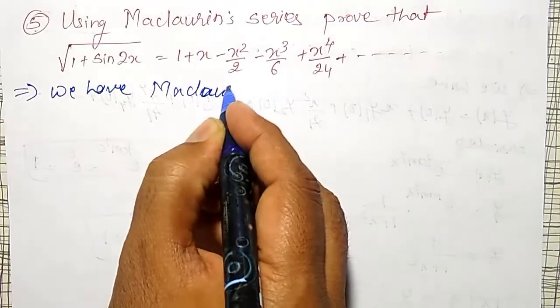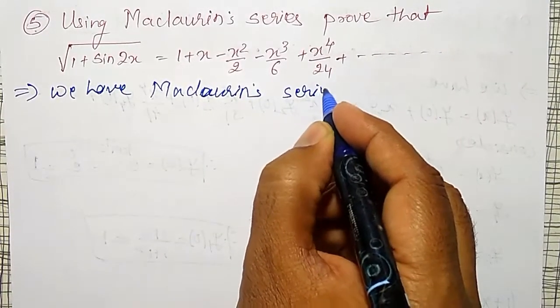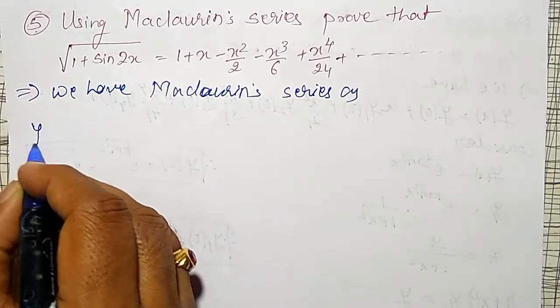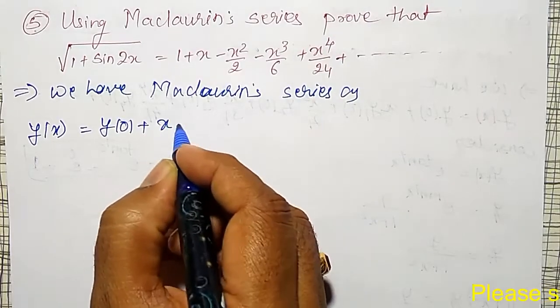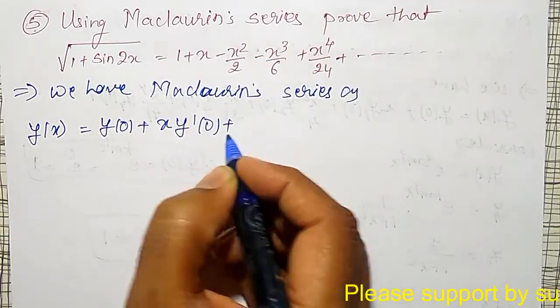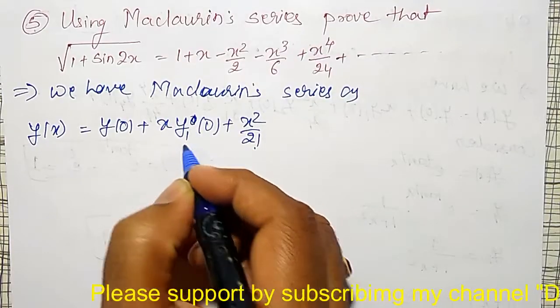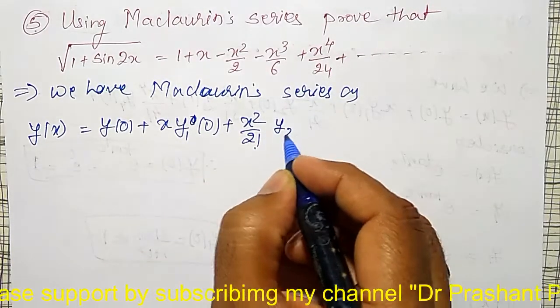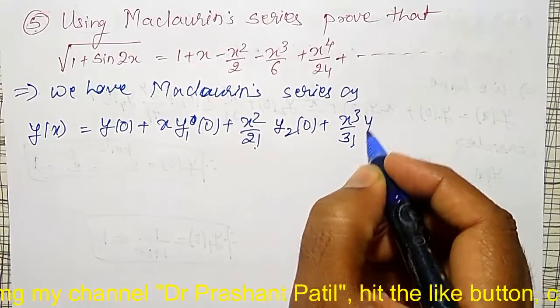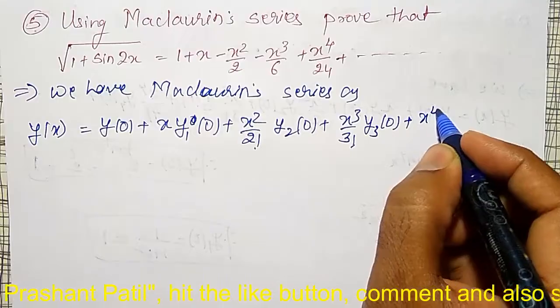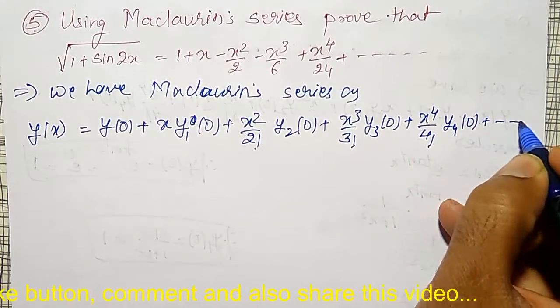y(x) equals y(0) plus x times y dash of 0 plus x squared by 2 factorial times y2 of 0 plus x cubed by 3 factorial times y3 at 0 plus x to the power 4 by 4 factorial times y4 at 0 plus so on.